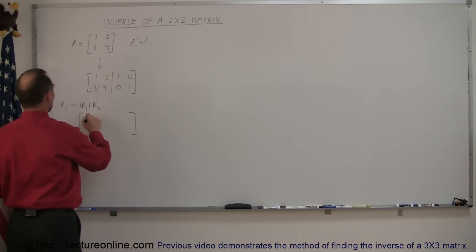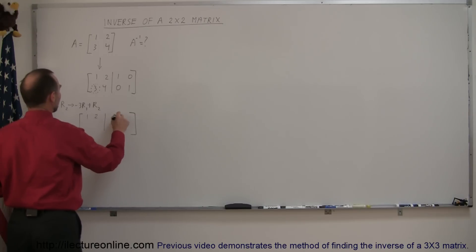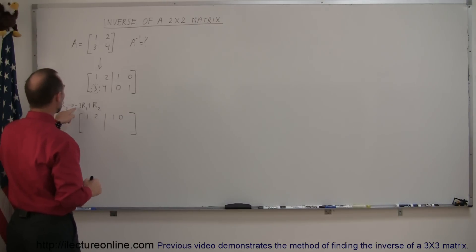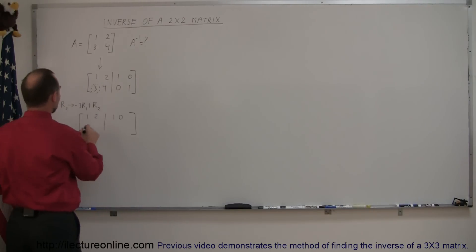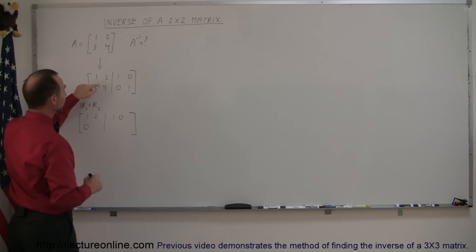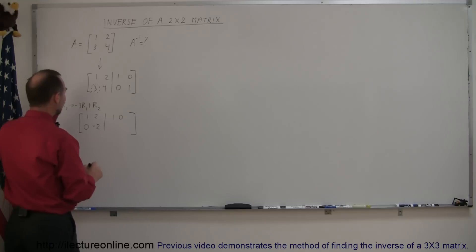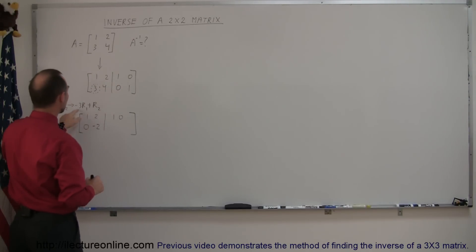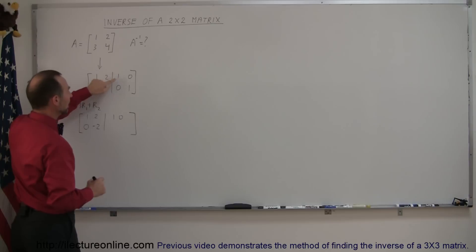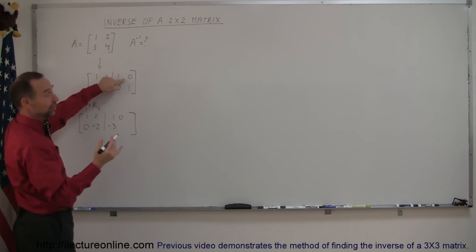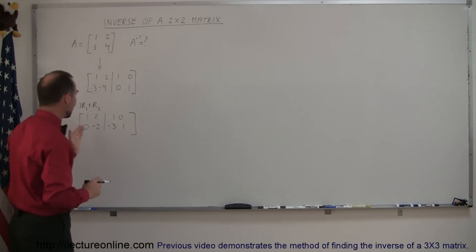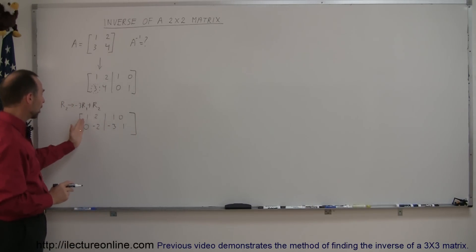The first row doesn't change — it's still 1, 2, 1, 0. For the new second row: negative 3 times 1 added to 3 gives 0. Negative 3 times 2 is negative 6, added to 4 gives negative 2. Negative 3 times 1 added to 0 gives negative 3. Negative 3 times 0 leaves 1 unchanged. So the first column is now 1 and 0, just as we wanted.